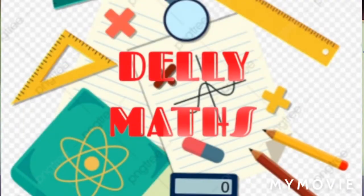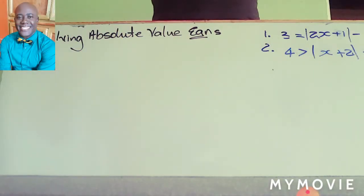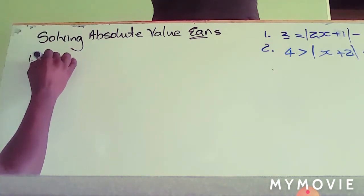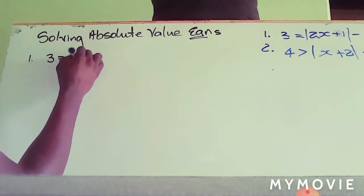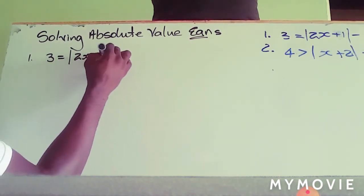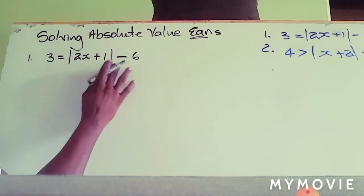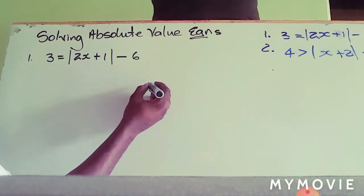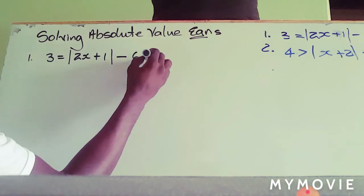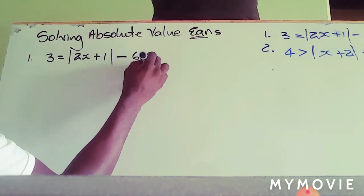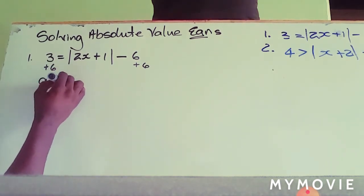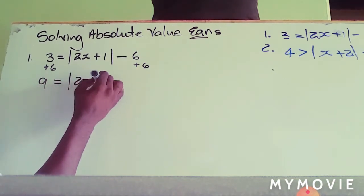Today we'll be solving absolute value equations. We have two examples, and we will be looking at one in this video and one in another video — so we're looking at number one: three is equal to the absolute value of two x plus one, minus six. We're going to get the absolute value on one side by removing that constant negative six, so we'll add six to both sides. That gives us nine, which is equal to the absolute value of two x plus one.